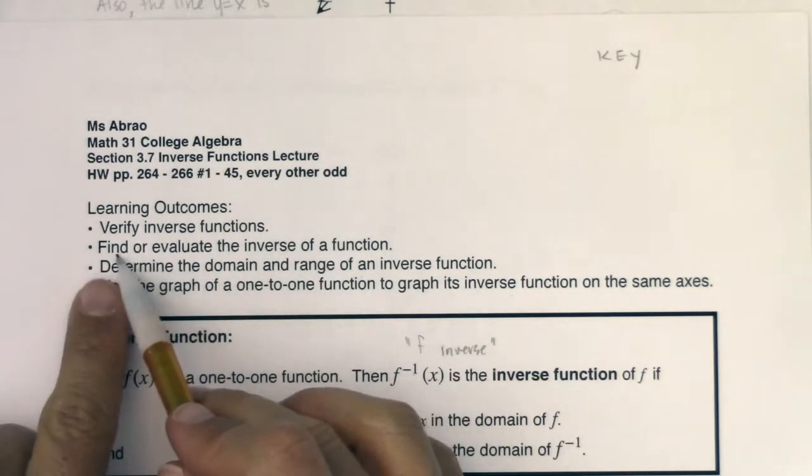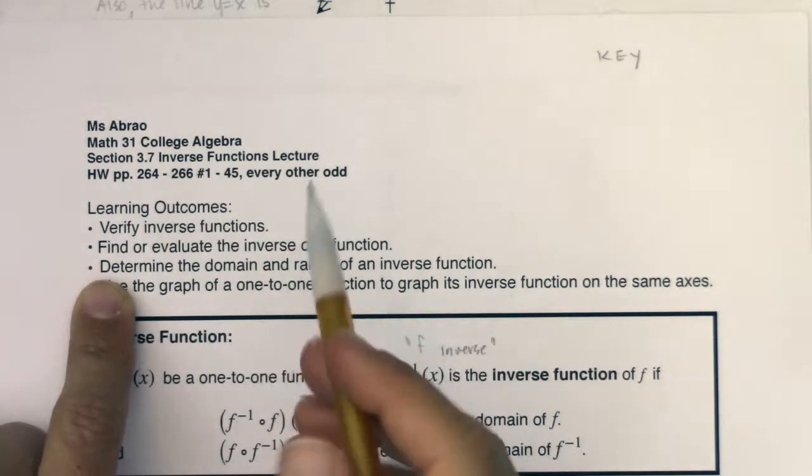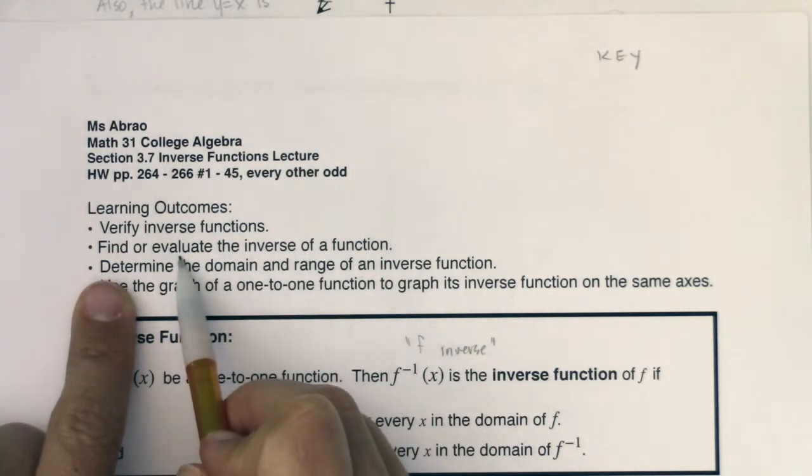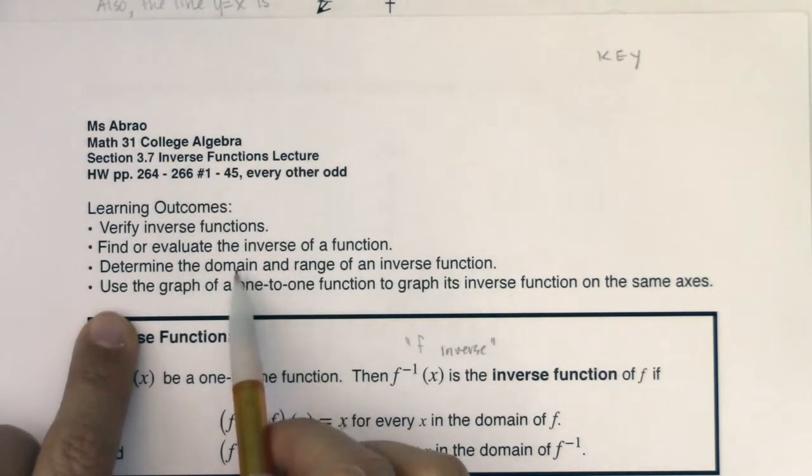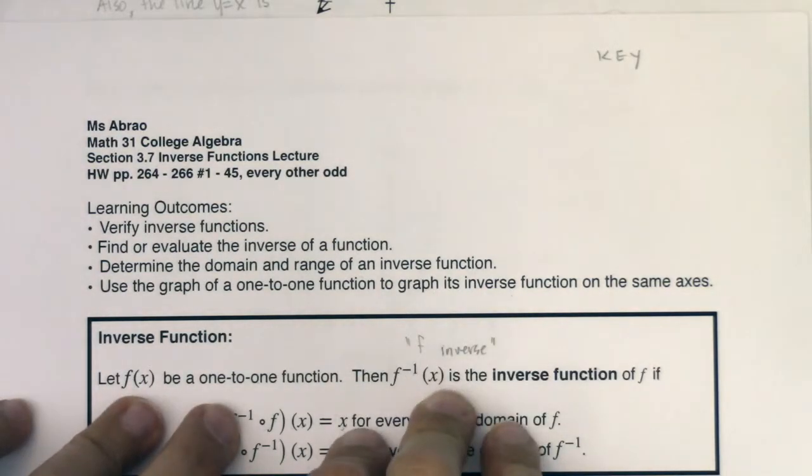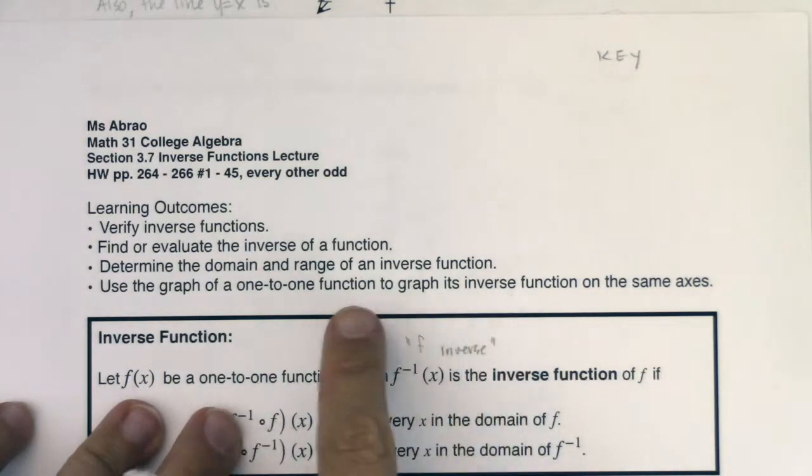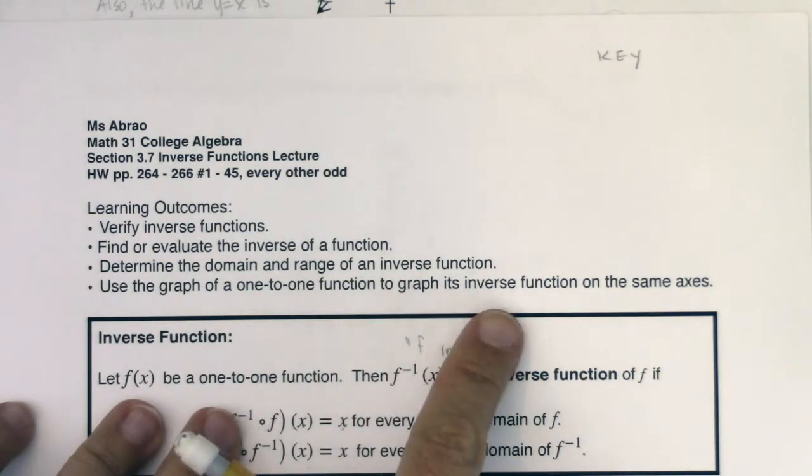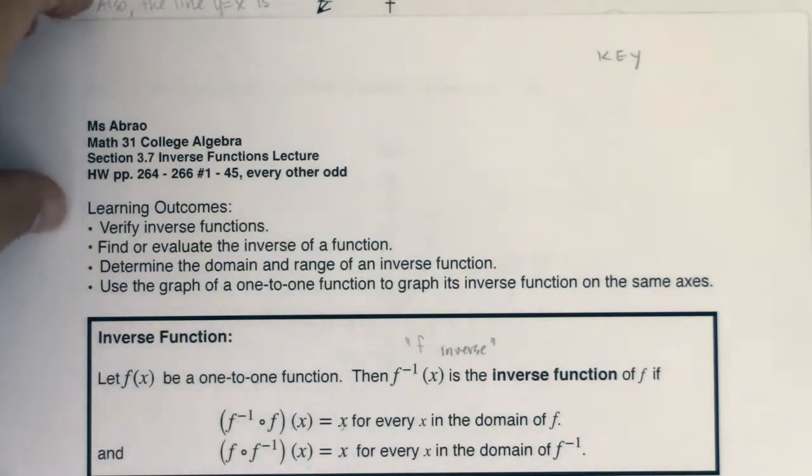We've talked about finding inverse functions by swapping x and y and solving for the new y. We've evaluated inverse functions like f inverse of 60 or f inverse of 4. We've discussed domains and ranges of inverse functions and how they relate to the original function. And we've seen that graphically, a function and its inverse are mirror images across the line y equals x.